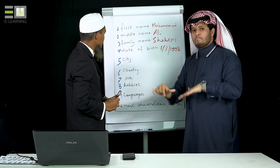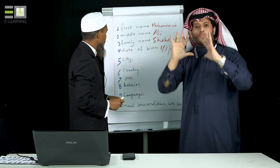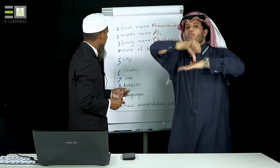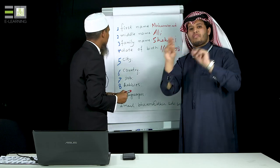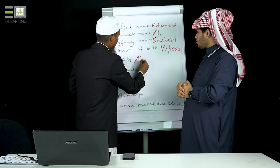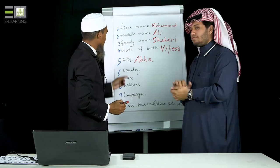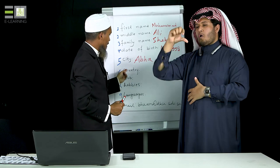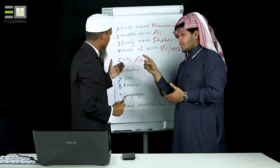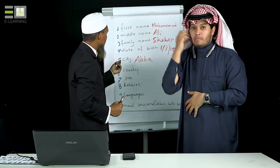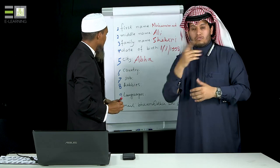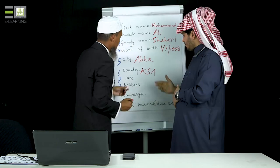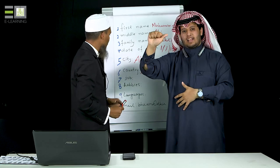Number five is city. City means where do you live. For example, you may live in Abha, Khamis Mushait, Riyadh, or Jeddah. So you write the name of your city here — for example, Abha. Number six is country. Country means your country — in Arabic, Dawla. For example, maybe you live in Saudi Arabia, so you can write KSA. K-S-A — the full form of KSA is Kingdom of Saudi Arabia.